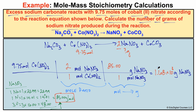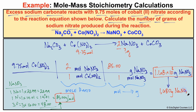So our final answer: if 9.75 moles of cobalt-2 nitrate reacts with excess sodium carbonate, we produce 1.68 × 10³ grams of NaNO₃, which is the same as 1,680 grams of NaNO₃. Either form is correct. We used three significant figures throughout, so our final answer is expressed to three significant figures.